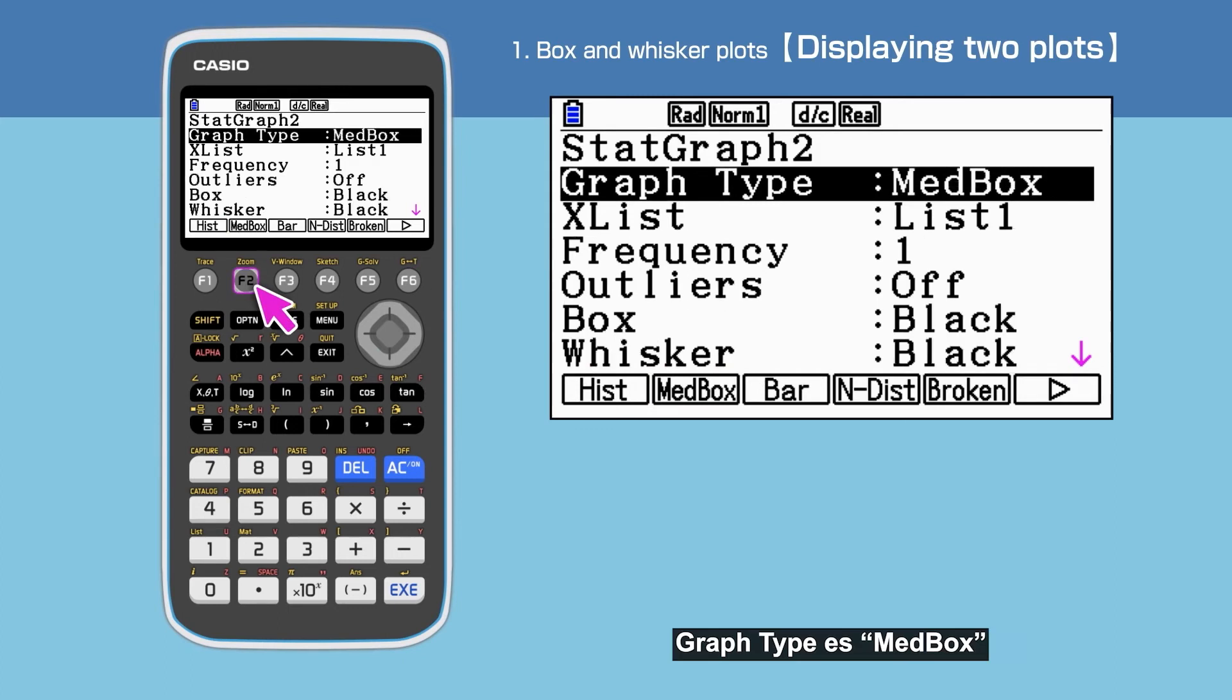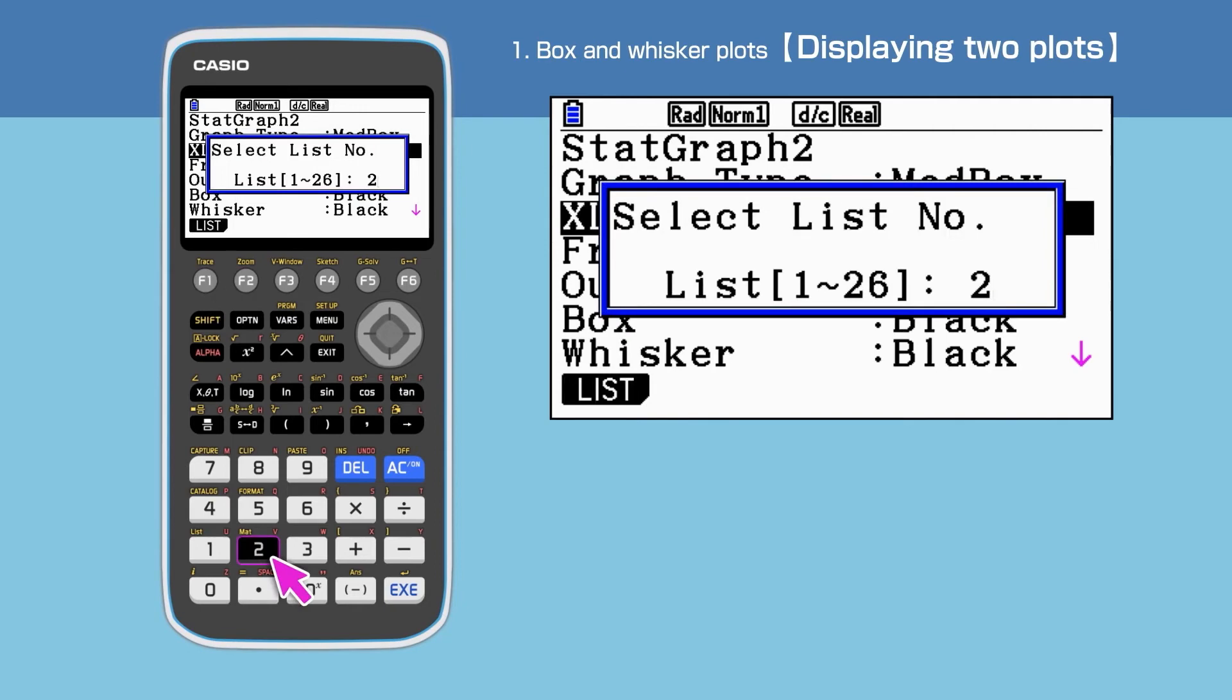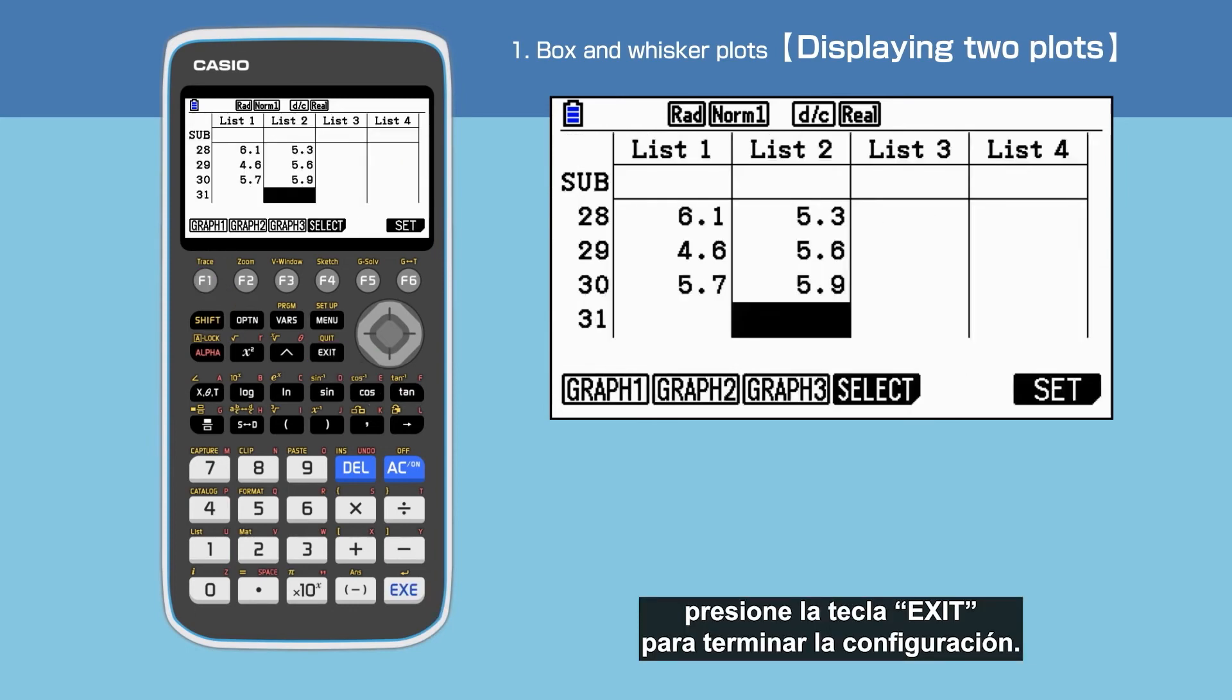Graph type is MedBox. X List is List2. And the frequency is 1. Press Exit to end setting.